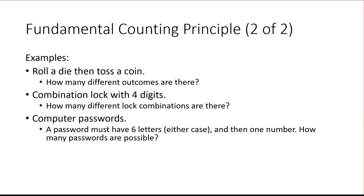If a computer password needs six letters and then one number, we want to know how many passwords are possible. It says six letters either case — if you're counting uppercase and lowercase letters as different things, for each of the first six spots you have 26 lowercase plus 26 uppercase, for a total of 52 options each. So it would be 52 × 52 × 52 × 52 × 52 × 52 for the six letter spots, and then 10 for the last number spot. It's a lot of combinations.